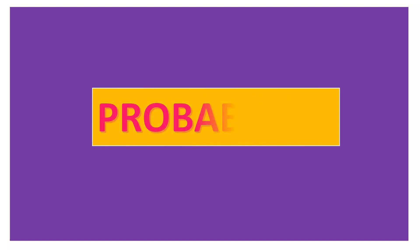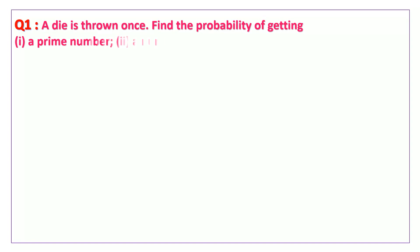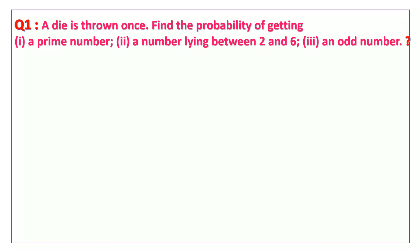Today we are going to learn some problems on probability. Question number one: a die is thrown once. Find the probability of getting a prime number, a number lying between 2 and 6, and an odd number.